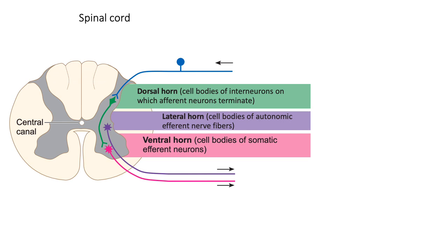The different horns — dorsal, lateral, or ventral — house different neuron cell bodies. The dorsal horn contains cell bodies of interneurons on which afferent neurons terminate. Remember, afferent arrives — so that's incoming information — and it will synapse with an interneuron within that dorsal horn. The lateral horn has cell bodies of autonomic efferent nerve fibers — efferent exits, and that's part of things that happen automatically in the body. And the ventral horn contains cell bodies of somatic efferent neurons, which synapse with skeletal muscle. So both lateral and ventral horn are associated with outgoing information from the CNS.